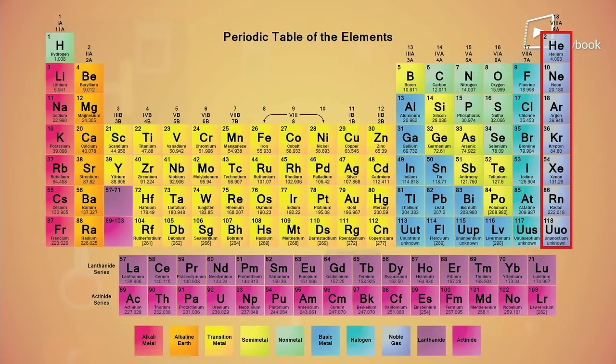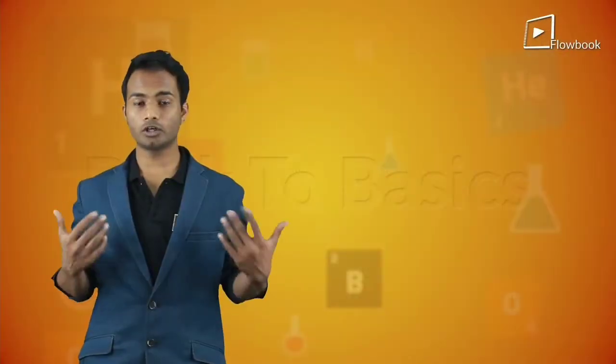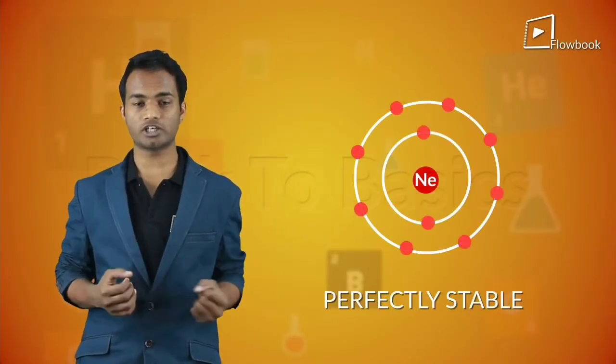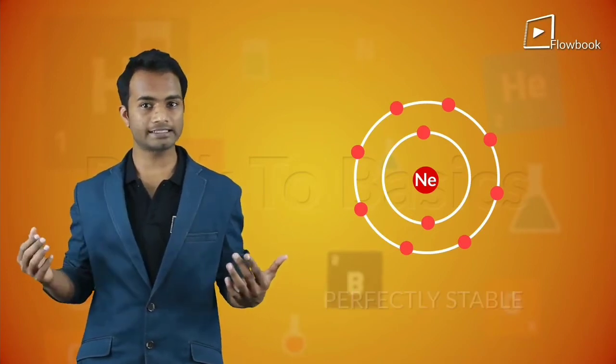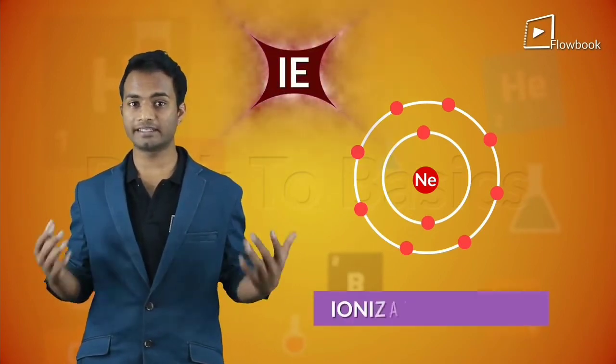All the noble gases have a perfectly stable electronic configuration and they don't want to mess their already stable structure. So for us to remove an electron from these, it needs a lot more ionization energy.